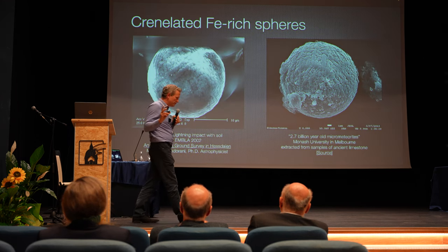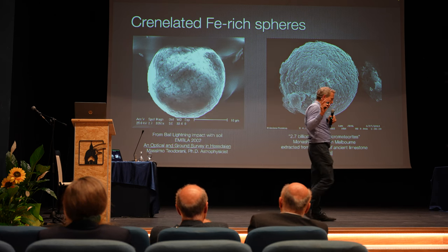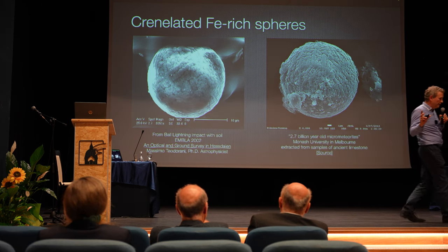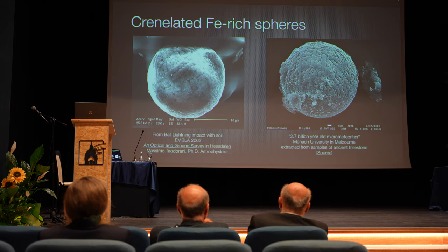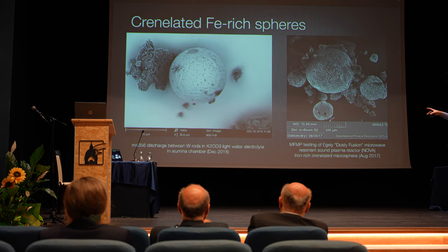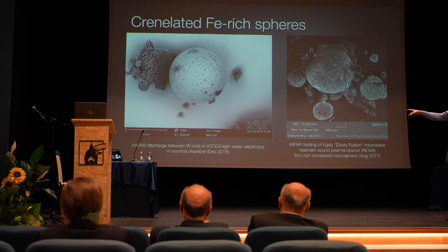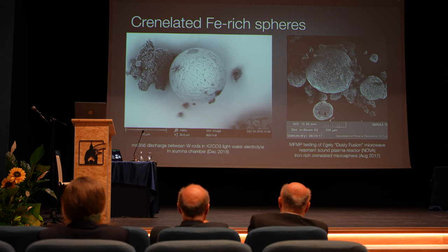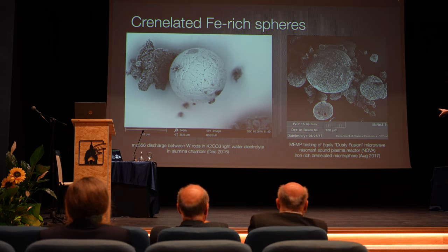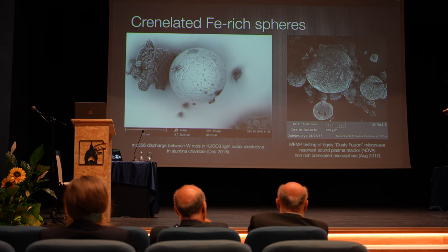Here are some natural phenomena. The one on the right is a ball lightning impacting Hestalen in Norway — that is an iron-rich crenelated sphere they recovered from the impact site. On the right you've got supposedly 2.7 billion-year-old micrometeorites. This is also Me356's tungsten rod electric discharge in potassium carbonate water in an aluminum chamber, which he produced in 2016. And this is in George Eagley's dusty fusion reactor — again, a crenelated microsphere.